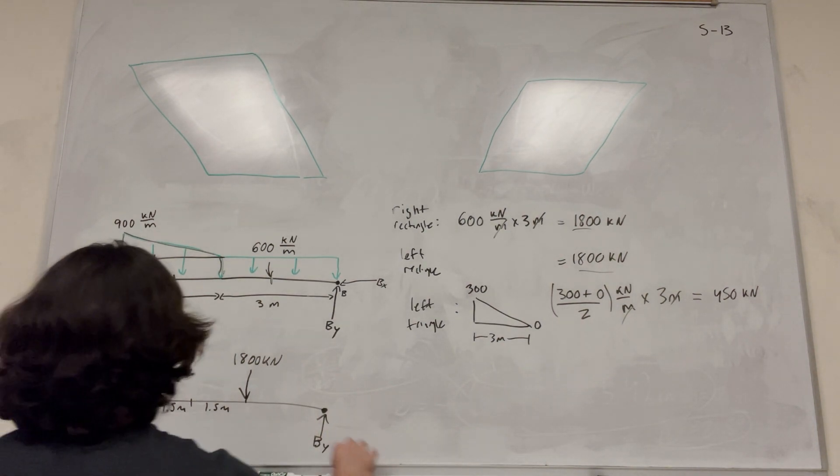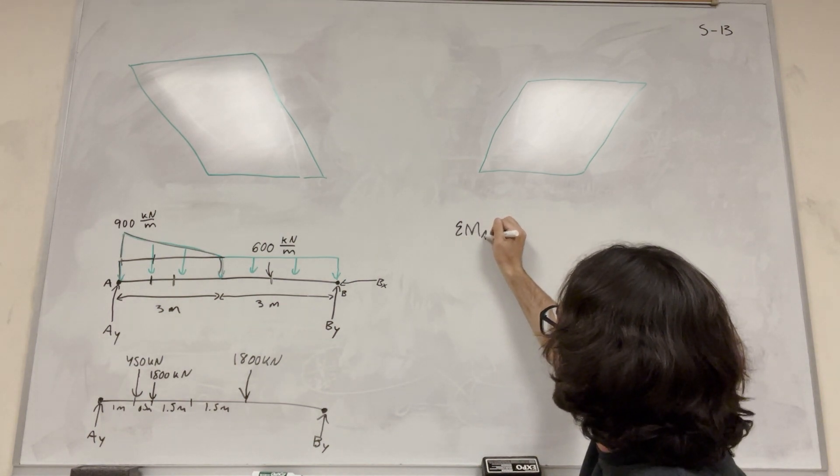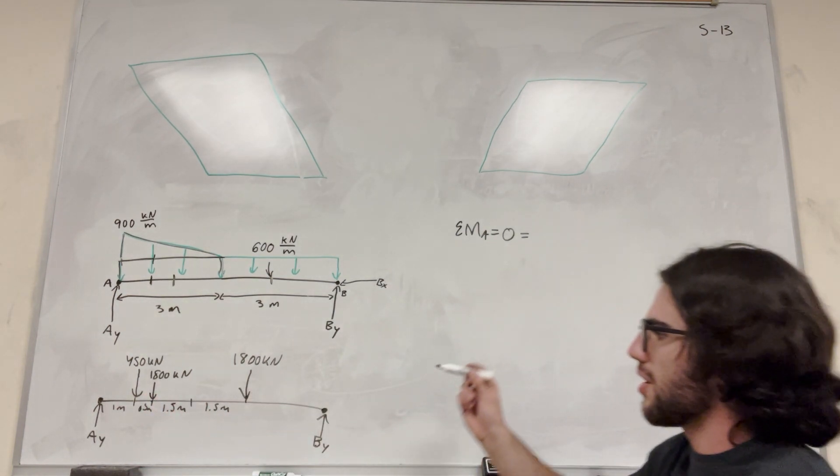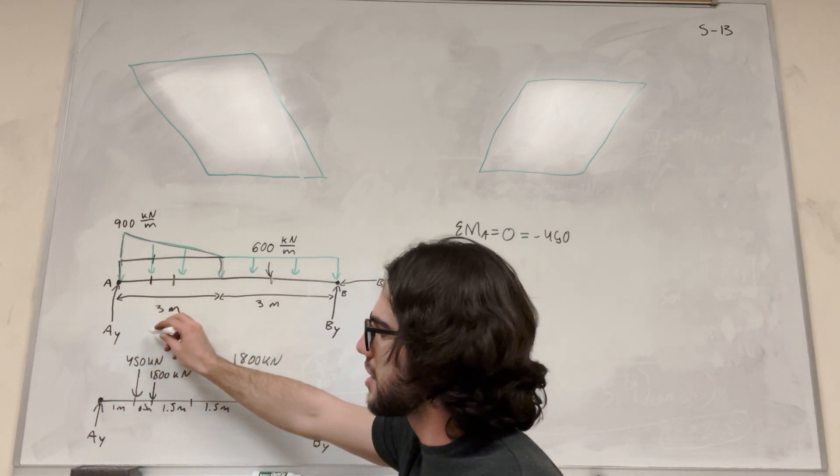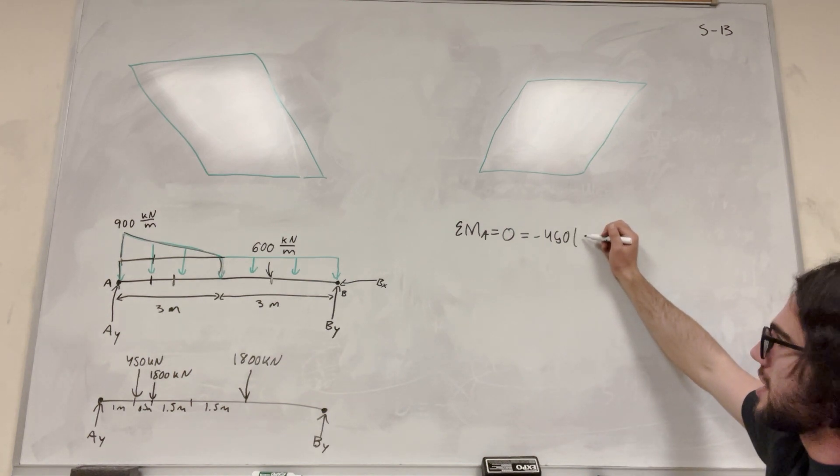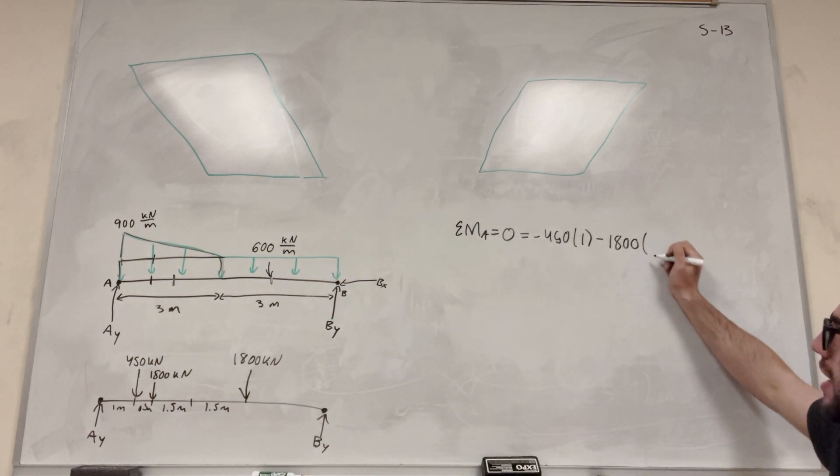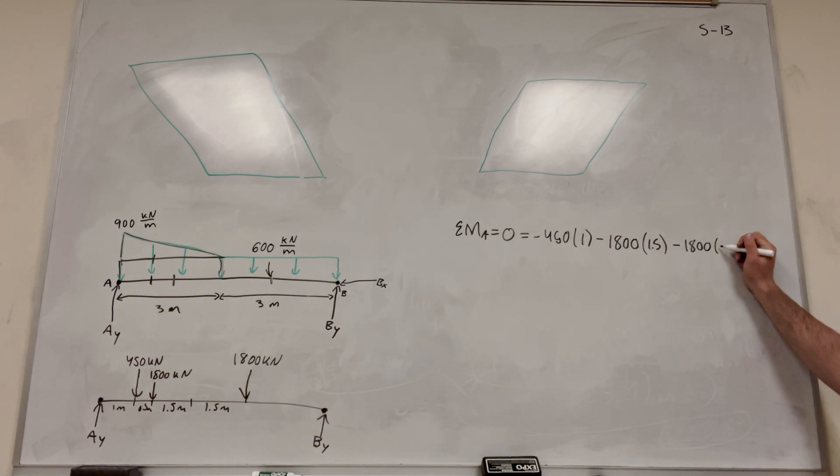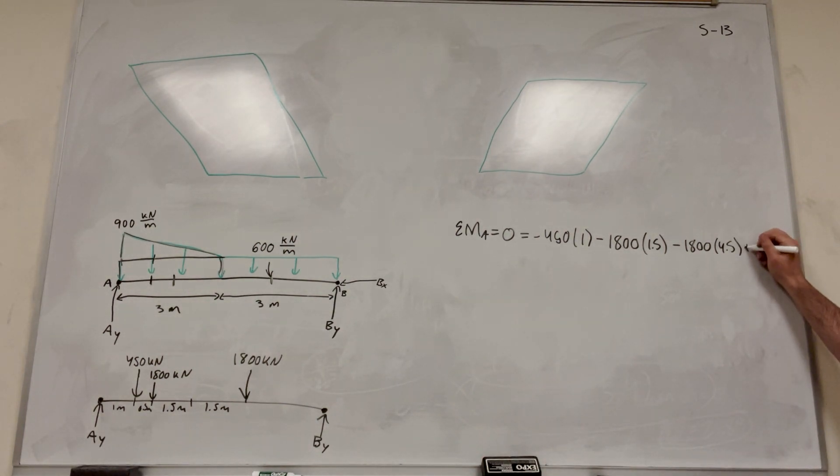So now that we have this, we can finally take our moments. So let's start taking the moments at A. Sum of the moments at A, we know it's equal to zero. So moving from A, we're going to go right. So we have this 450 kilonewtons load, negative 450. And I put a negative because it's going to make us want to rotate clockwise. If you push here, it makes us want to rotate clockwise. And clockwise is a negative number. So minus 450 times its distance, which is 1 meter. Then the next one is 1,800, and it's also making us want to rotate clockwise. So it's minus 1,800, and its distance is 1.5 meters. Next one is 1,800, also negative because it makes us want to rotate clockwise. This distance is 4.5. And then finally, our last one is B_y. So B_y is actually the one making us rotate counterclockwise. So we're adding B_y, and its distance is 6 meters.